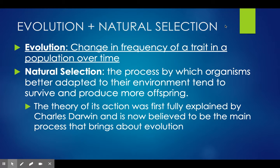Evolution happens because of this thing called natural selection. Natural selection is the process by which organisms better adapt to their environment. Organisms that are better adapted to their environment tend to survive and produce more offspring. So if you're better fit for the environment that you're in, then you are going to be better able to survive and reproduce and pass on your genetic information. This theory of natural selection was first fully explained by Charles Darwin and is now believed to be the main process that brings about evolution.